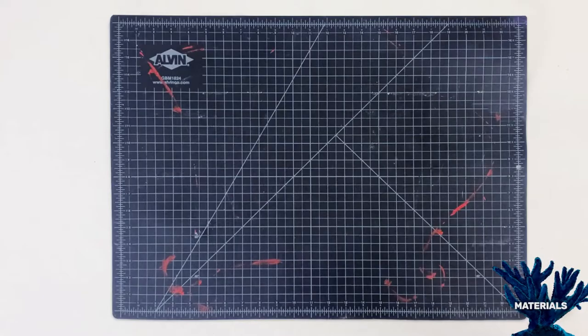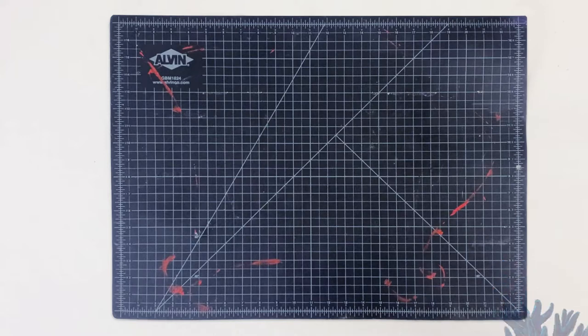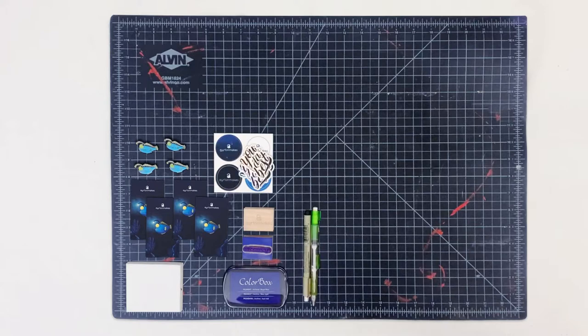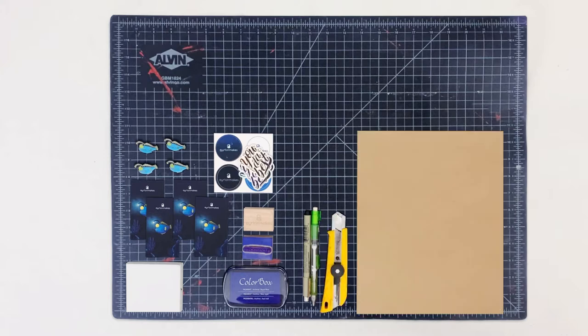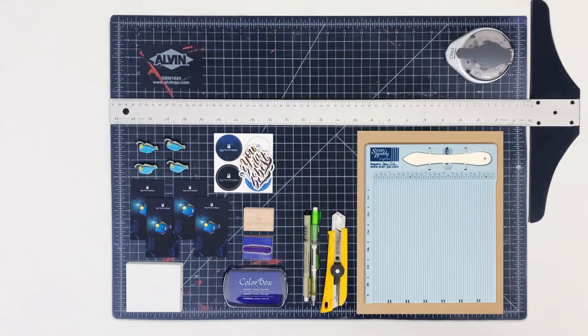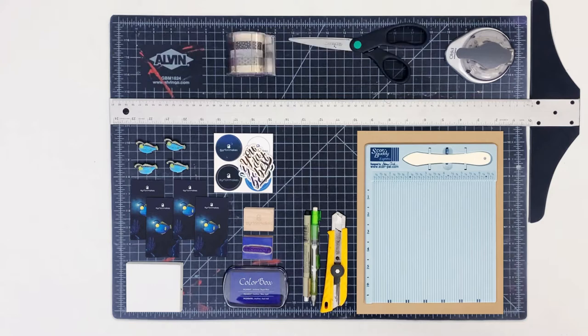These are the materials I use to package my pins: a cutting mat, the pins, pin backings, a foam block, stickers, stamps and stamp ink, a pencil and a micron, a utility knife, cardstock, a scoring device, a t-square, a round corner cutter, scissors, washi tape, packaging tape, and a shipping roll.